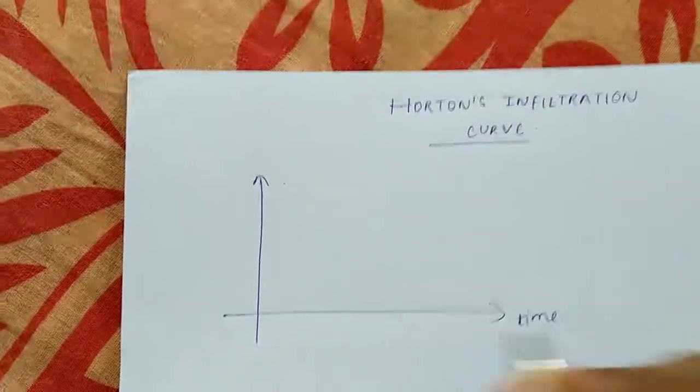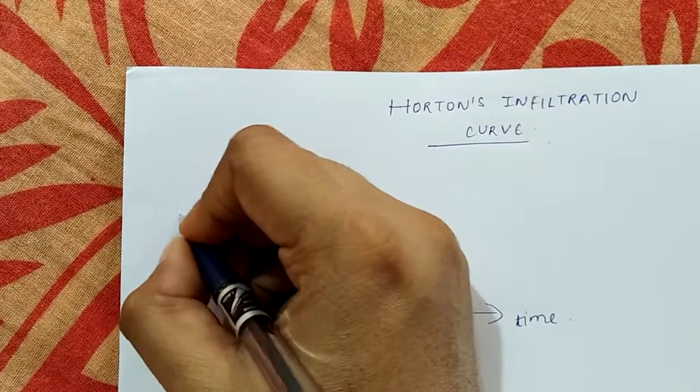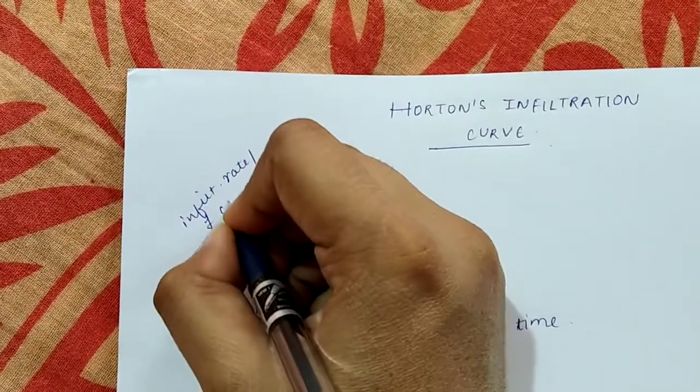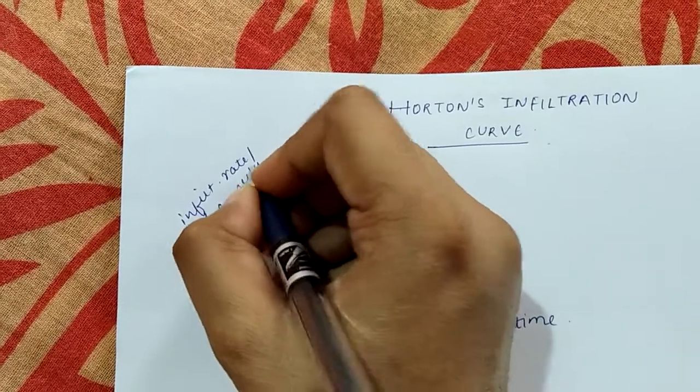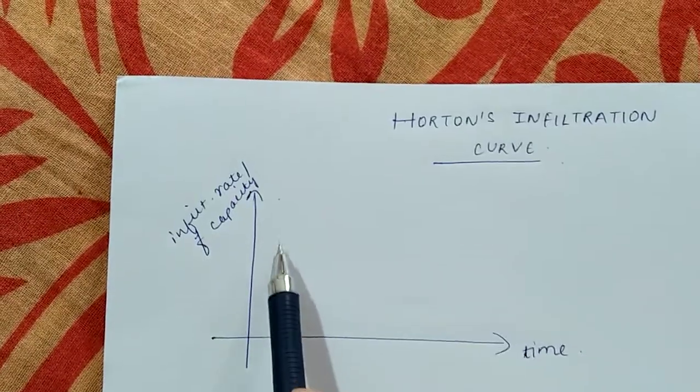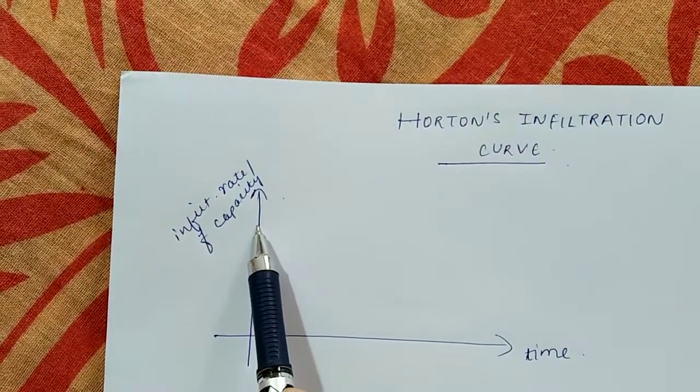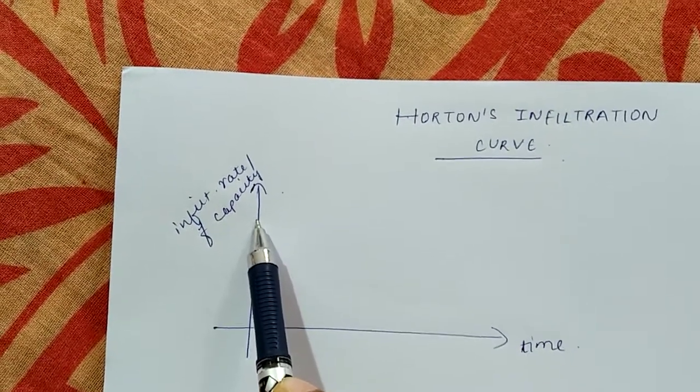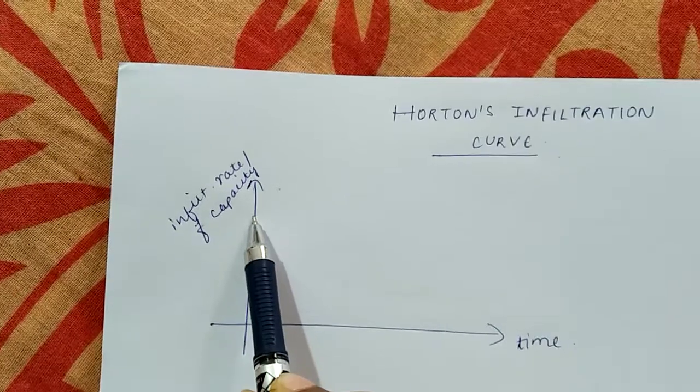With respect to time, F is the infiltration rate or capacity. Initially when the soil moisture is not there, when the soil is dry and rainfall has just started, infiltration will start at a faster rate.